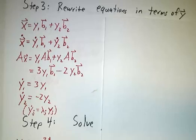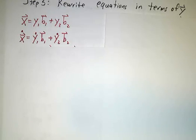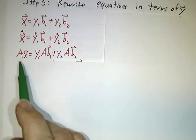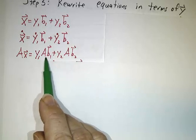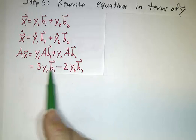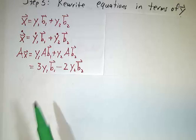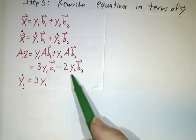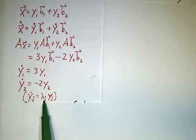Now let's rewrite our equations in terms of y. Since x can be expanded in terms of y, the derivative of x — using dot notation, where dot means a time derivative — since b1 and b2 are fixed vectors, the time derivatives are just y1-dot times b1 plus y2-dot times b2. Meanwhile, Ax equals A times y1*b1 plus A times y2*b2. Since y1 and y2 are scalars they pull out, and because b1 and b2 are eigenvectors, Ab1 equals 3b1 and Ab2 equals -2b2. Since x-dot equals Ax, that means y1-dot must equal 3y1, and y2-dot must equal -2y2. In general, yj-dot equals the jth eigenvalue times yj.